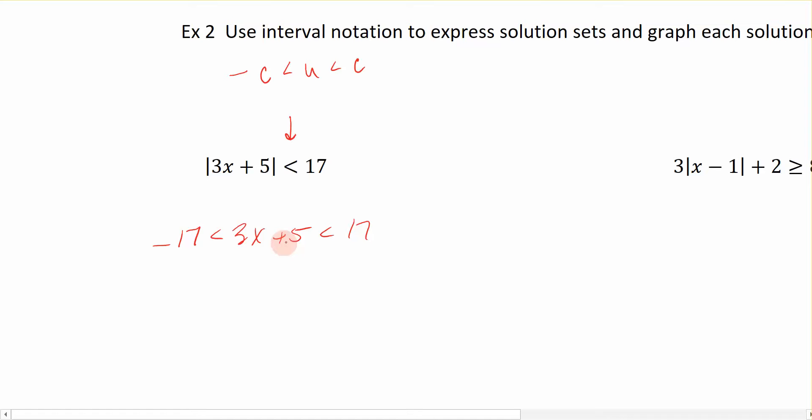When we do that, we're going to subtract 5 from all sides. So minus 5, minus 5, minus 5. That's going to give me negative 22, less than 3x, which is less than 12. Divide everything in here by 3, because we're trying to get the variable x by itself.